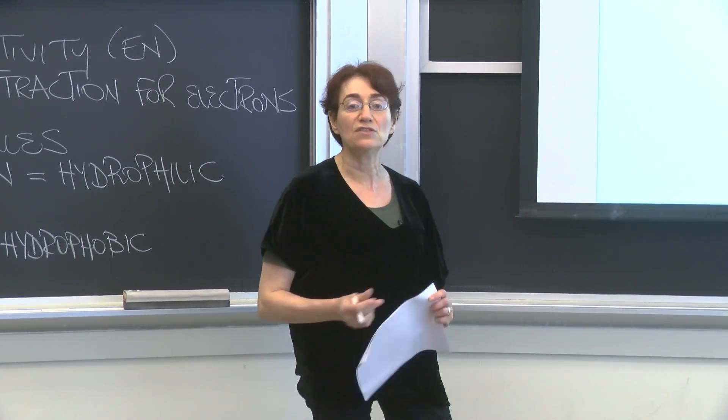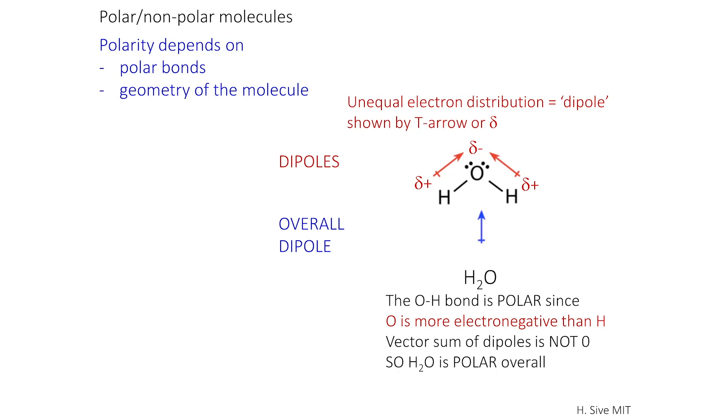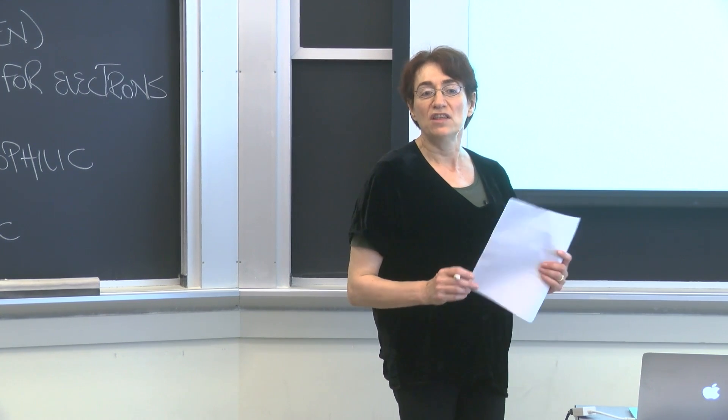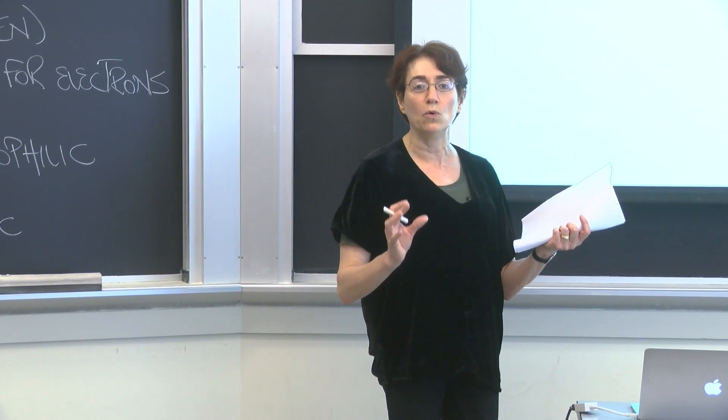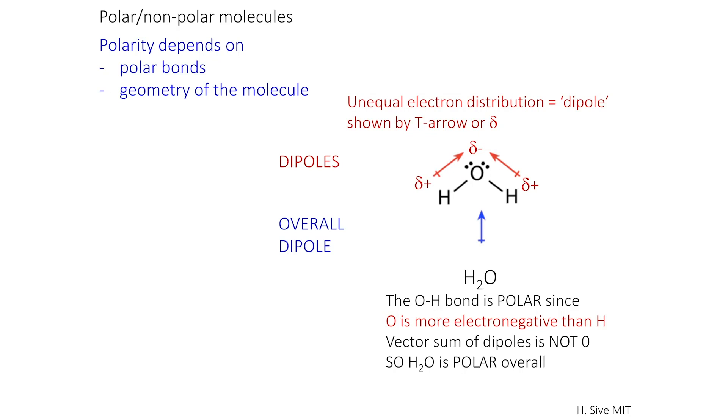The hydrogens are somewhat positive because of their lower electronegativity, and this is indicated by those deltas. Delta minus means that the atom is more negative than an atom that's indicated delta plus. So delta negative is the oxygen, delta plus is the hydrogen. The geometry of the molecule also is such that these dipoles don't cancel out, and so you get overall a molecule that is polar overall.